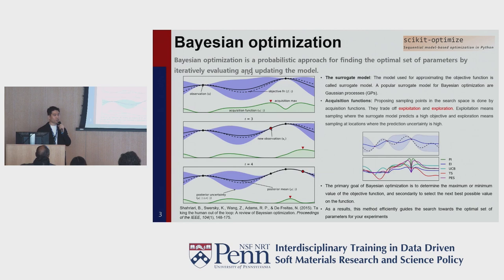The goal of Bayesian optimization is not to determine the entire objective function. The real goal is to determine the maximum or minimum value, and then select the best possible optimal value. As a result, this method efficiently guides the search toward the optimal set of parameters for your experiment.